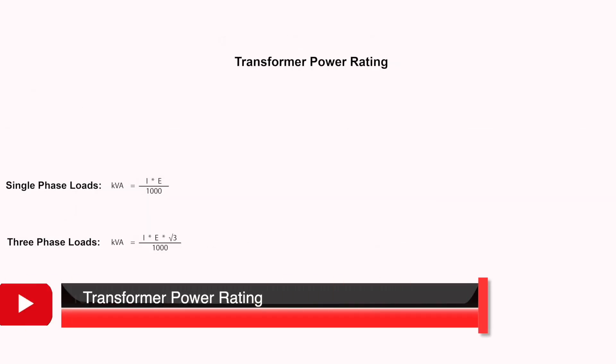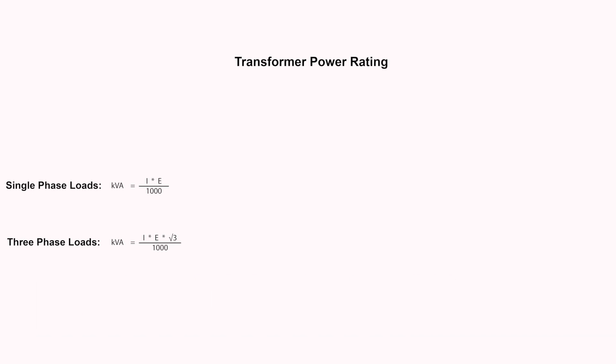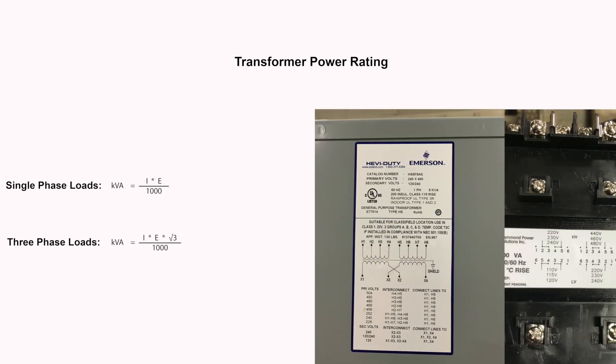Just like horsepower ratings designate the power capacity of an electric motor, a transformer's kilovolt ampere rating indicates its maximum power output capacity. To calculate a transformer's rating, the following equations are used. Typically, the power rating on a transformer can be found on the transformer's nameplate.